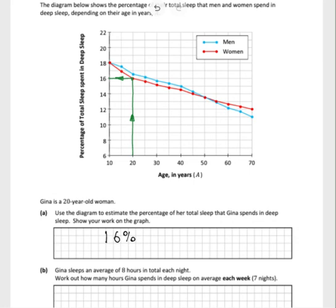On to part B now. Gina sleeps an average of 8 hours in total each night. We would like to find out how much deep sleep she will get on average each week for seven nights. So all we need to do here is multiply everything out, so we have 16% per night of 8 hours by 7 days.